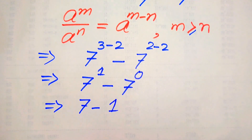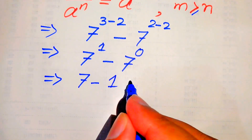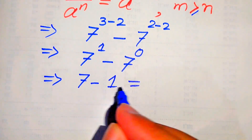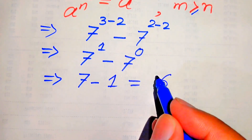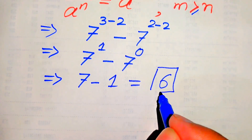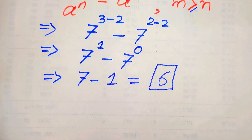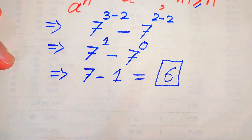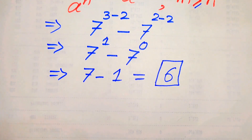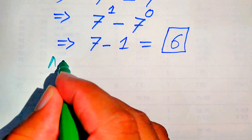Finally, we have 7 minus 1 equals 6. This is our final answer from the first method. Now, in the same pattern, we move towards our second method.